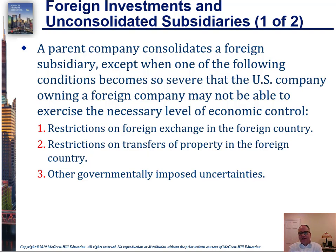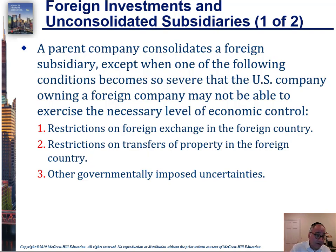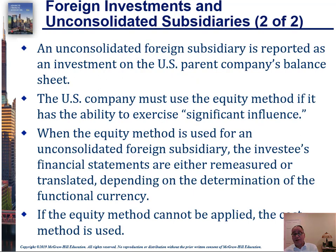A parent company consolidates a foreign sub, except when conditions are so severe that the U.S. company doesn't have sufficient economic control. So if there are restrictions on foreign exchange, restrictions on transfers of property, or other governmentally imposed uncertainties, it could mean that the parent does not have control of the sub — even if the parent owns more than 50% — and therefore it does not need to be consolidated. It'll be presented as a separate line item on the balance sheet and income statement, such as 'investment in foreign subsidiary.' As long as the company has the ability to exercise significant influence, it can still use the equity method.